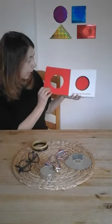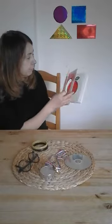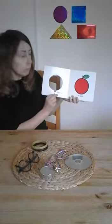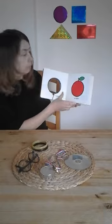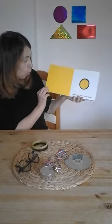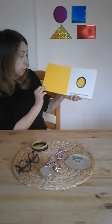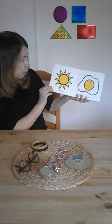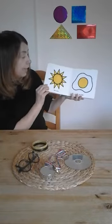What can a big red circle be? A balloon? An apple? What can a yellow circle make? The sun? An egg?